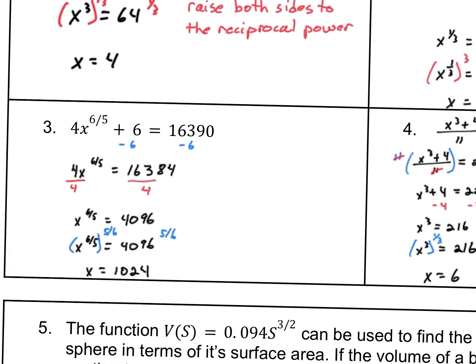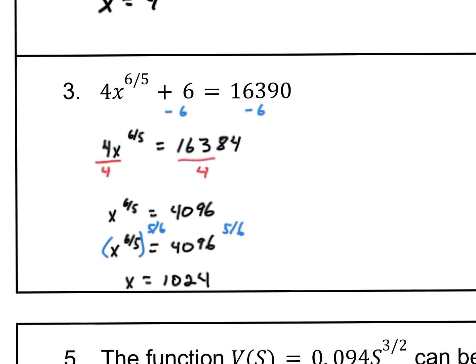Now let's take a look at number three. We have 4x to the six-fifths plus six equals 16,390. We subtract six from both sides to get 4x to the six-fifths equals 16,384. Now, before we address the fractional exponent, this x is being multiplied by four — so we divide by four on both sides. Now x to the six-fifths equals 4,096. To solve this, we raise both sides to the reciprocal power: x to the six-fifths raised to the five-sixths cancels out, giving x equals 4,096 to the five-sixths. Plug that into your calculator and you get 1,024.